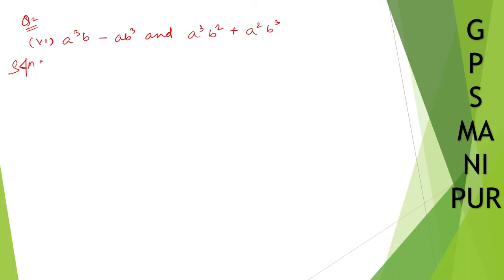Solution: So a cube b minus a b cube, I can write this as taking a b common. If you take a b common, then what's left out here is a square minus b square. So a b times a square minus b square is a minus b times a plus b. The formula is like this.